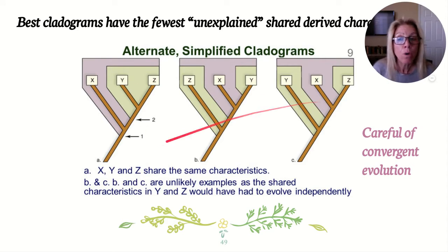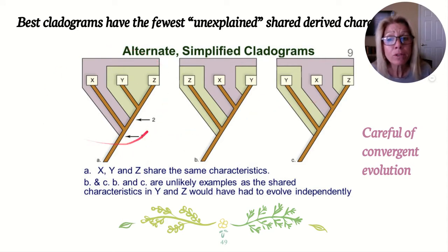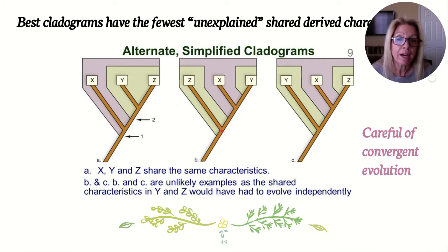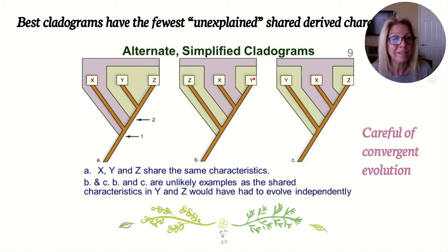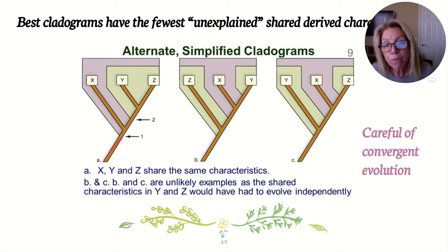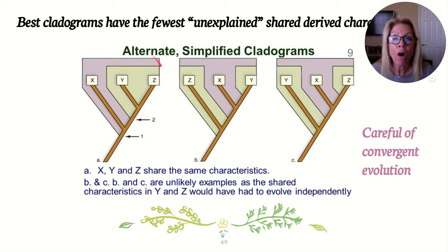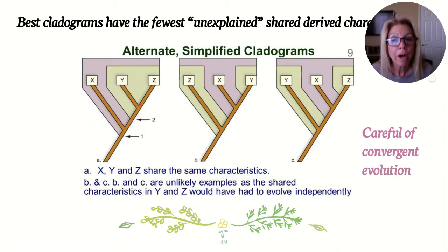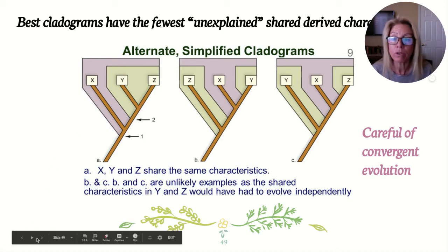Which cladogram is best — the first, second, or third? Hopefully you see the first. In the second arrangement, Z has the ancestral trait, X loses it, and then Y regains it — that doesn't make as much sense. In the best arrangement, a common ancestor means X, Y, and Z all share the trait, and then Y and Z diverged later, meaning they are probably more closely related.